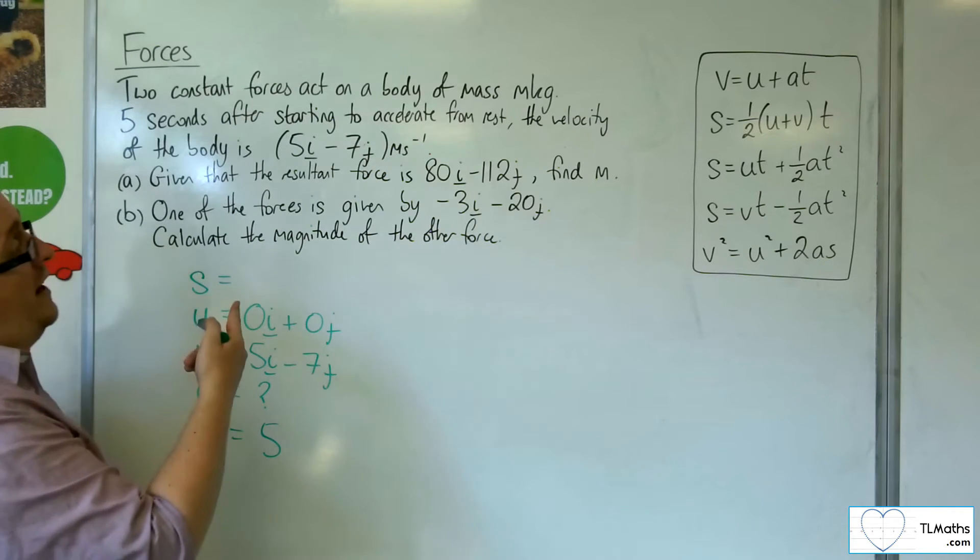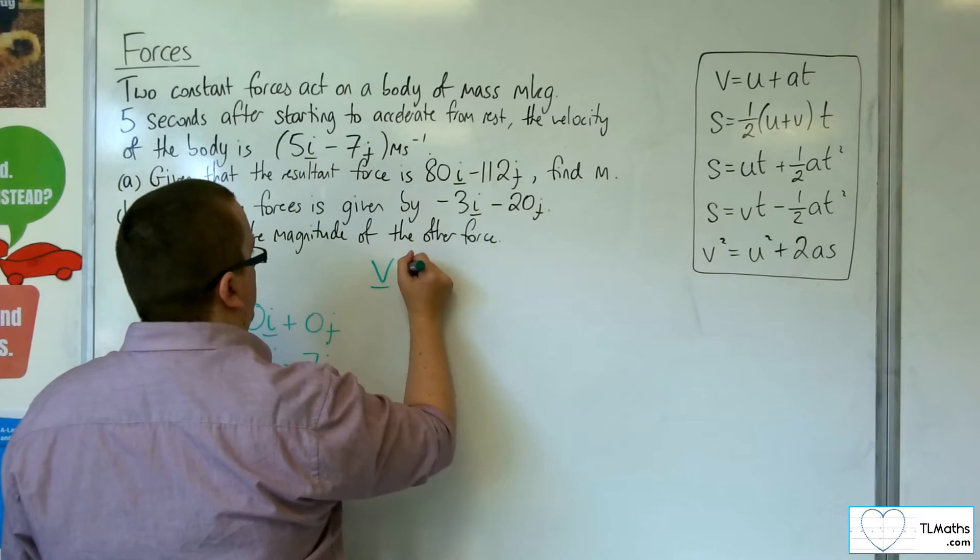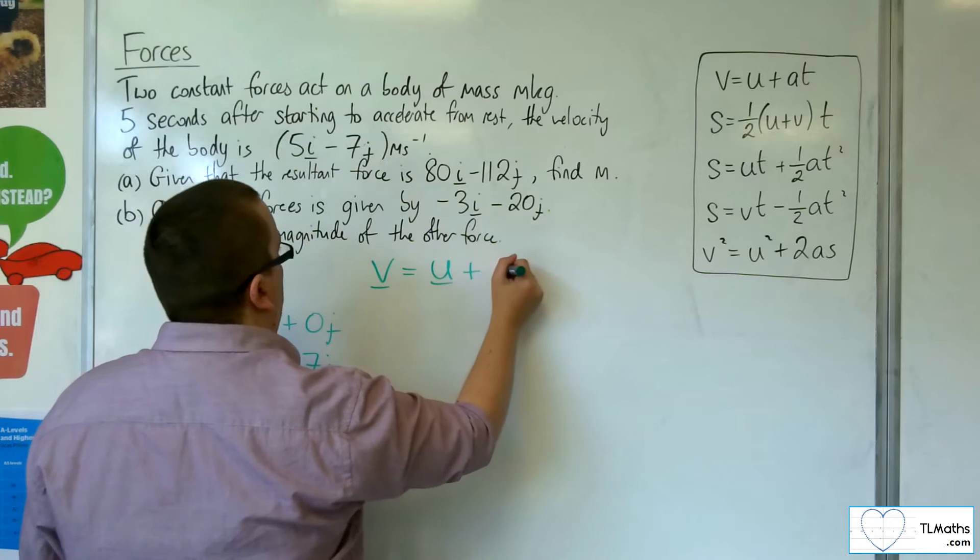T was 5, the initial velocity is 0i plus 0j because we're going from rest, and the final velocity is 5i minus 7j. And I want to find the acceleration. So the equation that doesn't have the s in it is v equals u plus at.